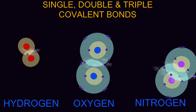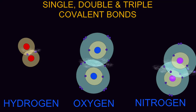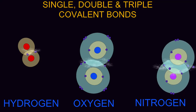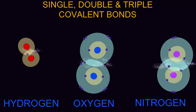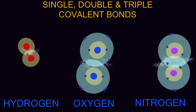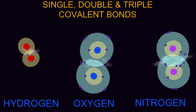Each of these nitrogen atoms possesses five electrons in its outermost shell, but the outermost shell can fit eight, and so each of these nitrogen atoms requires three electrons to fill its outermost shell.